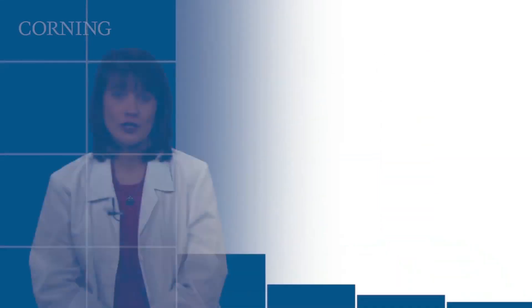The Centristar centrifuge tubes have an improved temperature range of minus 80 to 120 degrees Celsius for a wider range of applications.